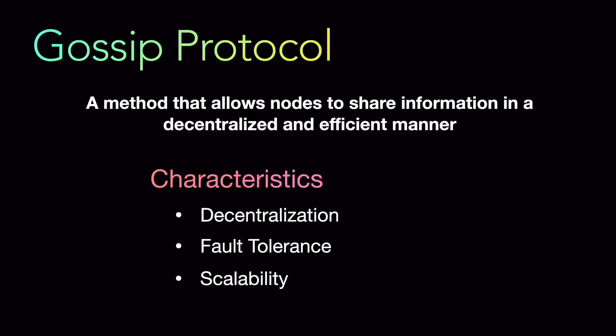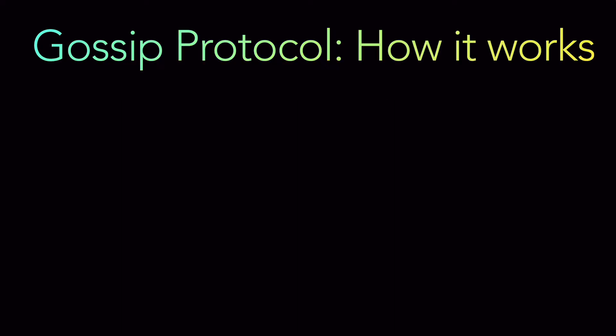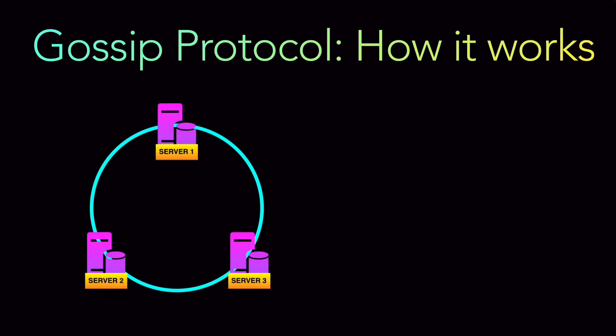So gossip protocol is primarily a mechanism to exchange information in a distributed, decentralized, and efficient manner, so that even if a node goes down, the information is always stored somewhere accessible. Now, how does it work? We're going to look at this through a diagrammatic approach. Let's say you have a network with three nodes — server one, server two, and server three. Server one has data points one and two, server two has data points two and three, and server three has data points one and three.